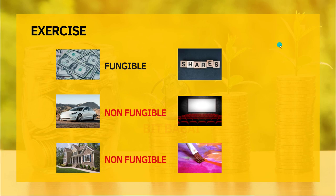Next is shares. We can exchange a share of a company with another share of the same company, because every share is exactly the same — no one values one share more than another for the same company, so it is fungible. But shares between different companies cannot be exchanged, so it is non-fungible in that way. Generally speaking, we can say shares are fungible.